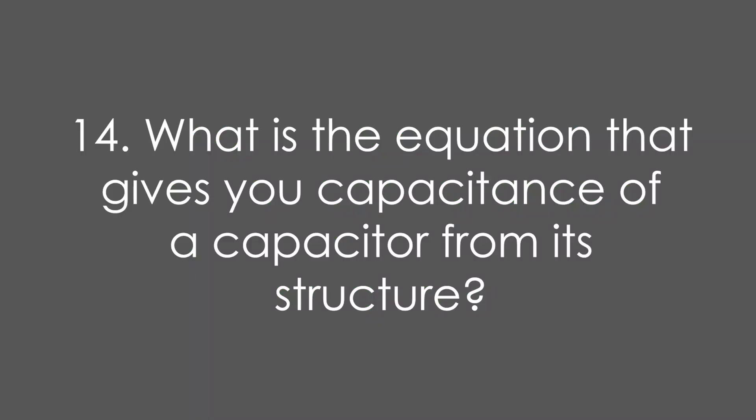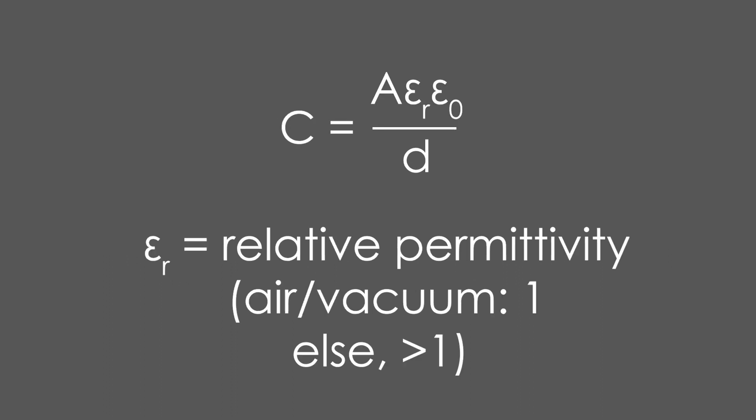Fourteen, what is the equation that gives you capacitance of a capacitor from its structure? It's C equals A epsilon R epsilon 0 over D. Epsilon 0 just being permittivity of free space and epsilon R just being relative permittivity. It's just a factor. For air in a vacuum, it's 1. Everything else is greater than 1.